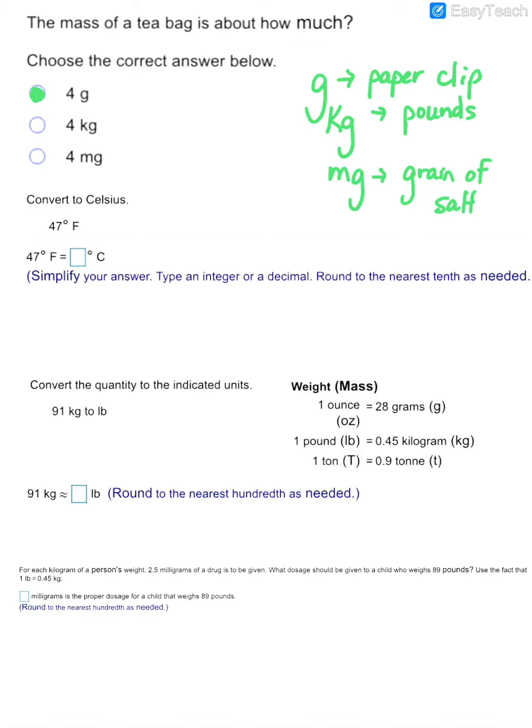Now with this next problem, you do need the formula for converting from Fahrenheit into Celsius. And so that formula says my Celsius will equal 5 over 9 times your Fahrenheit temperature minus 32 degrees. And so they have given me a Fahrenheit temperature of 47. So if I plug that in for F, then I'm going to go ahead and subtract 32.